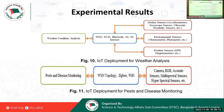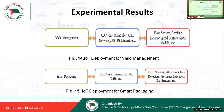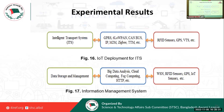IoT deployment for weather analysis and pest and disease monitoring will also be covered. All things will be covered for the monitoring system, including chemical distribution and the irrigation process. Yield management, smart packaging, and deployment of an Intelligent Transport System (ITS) to the customer's end will be included, and an information management system will be implemented.